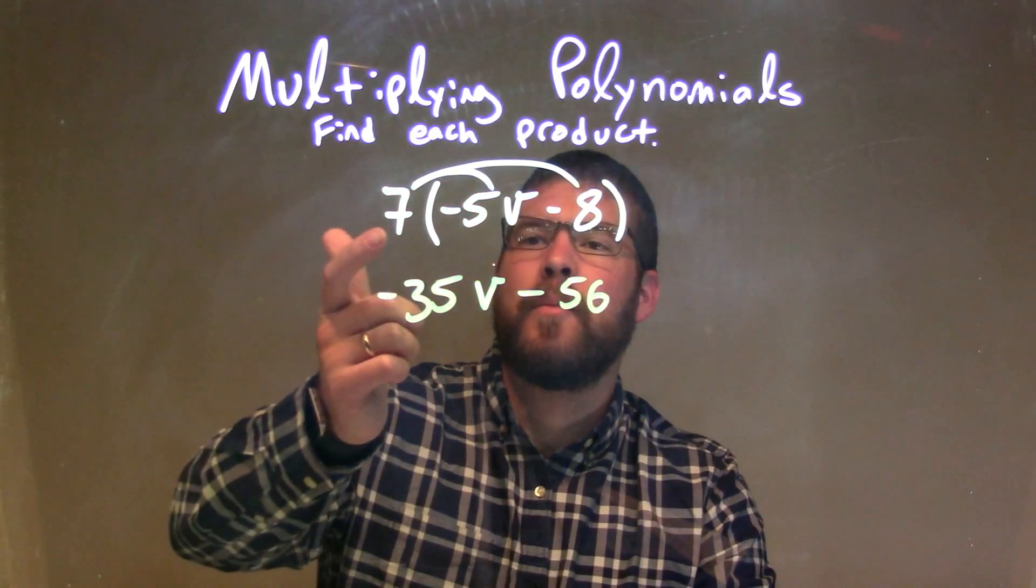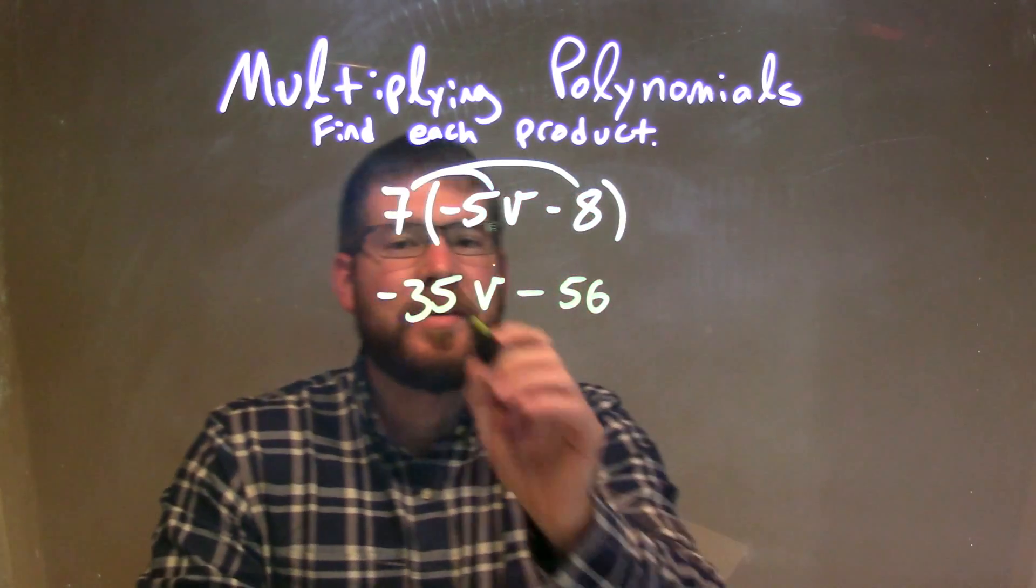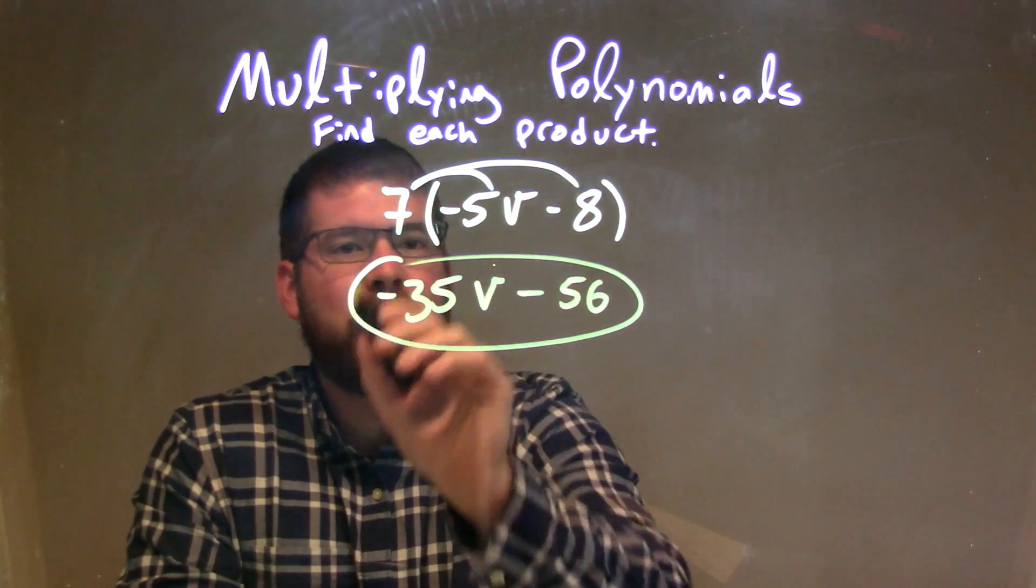So now when we multiply this out, we end up with negative 35v minus 56, and that is our final answer.